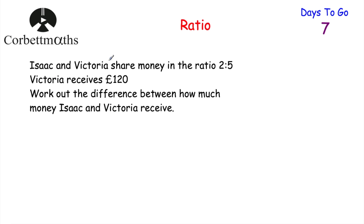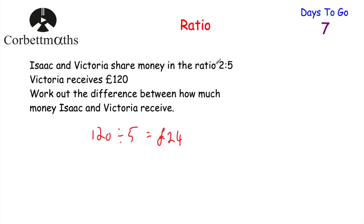The next question: Isaac and Victoria share money in the ratio 2 to 5, and Victoria receives £120. Work out the difference between how much money Isaac receives and Victoria receives. Victoria's part in the ratio is 5, so £120 divided by 5 equals £24 per part. Multiplying by Isaac's part of 2: £24 times 2 equals £48. So Isaac receives £48 and Victoria receives £120.